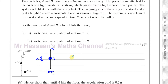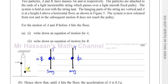For particle B, the tension acts upwards and its weight MG acts vertically downwards. B is going to accelerate upward with the same magnitude of acceleration as A, because they are connected by a light inextensible string.